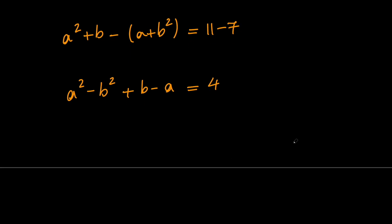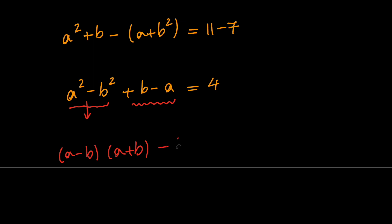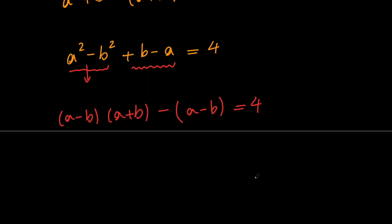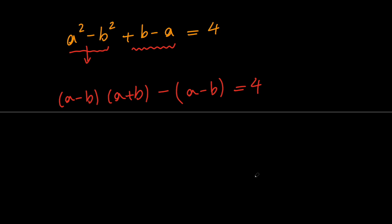Next, notice that a squared minus b squared is a difference of two squares, so we can factor this into a minus b times a plus b. We can also take out a negative from b minus a, giving us minus the quantity a minus b. So a minus b is the common factor, and we get a minus b times a plus b minus 1 equals 4.